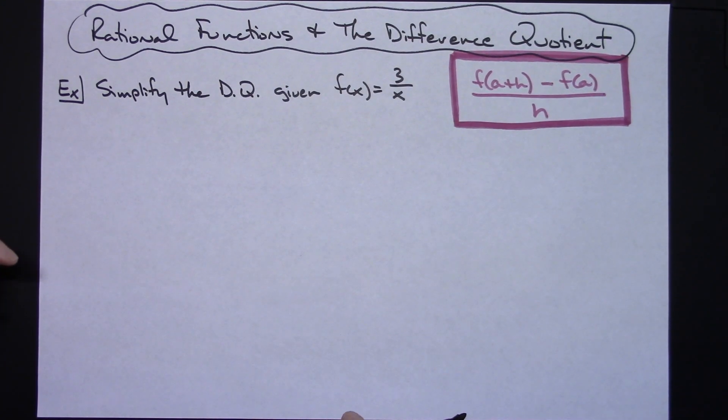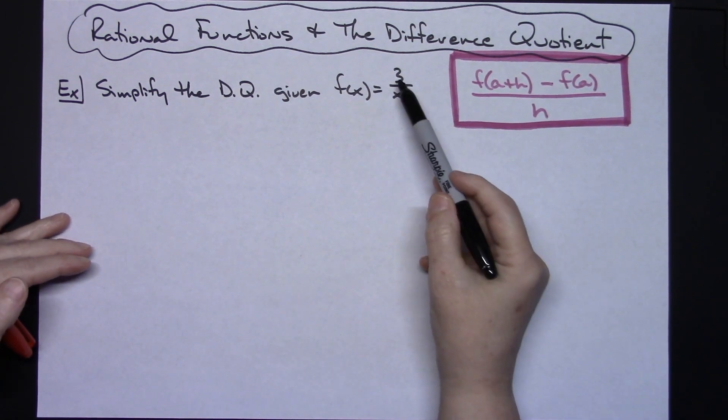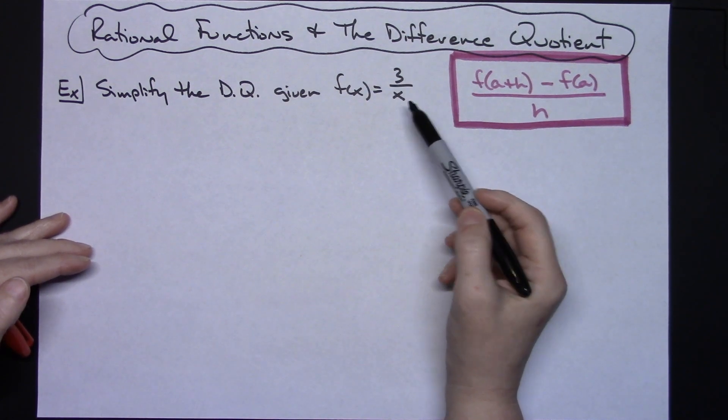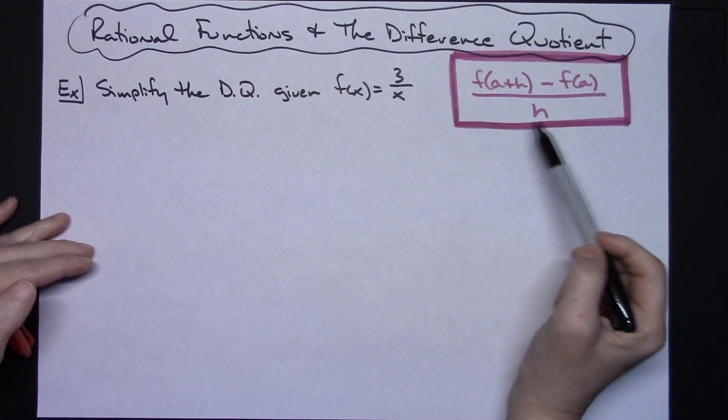In this video I'm going to take a look at rational functions and the difference quotient. We're going to simplify the difference quotients when given a rational expression such as 3 over x. Now there's lots of different forms of the difference quotient.